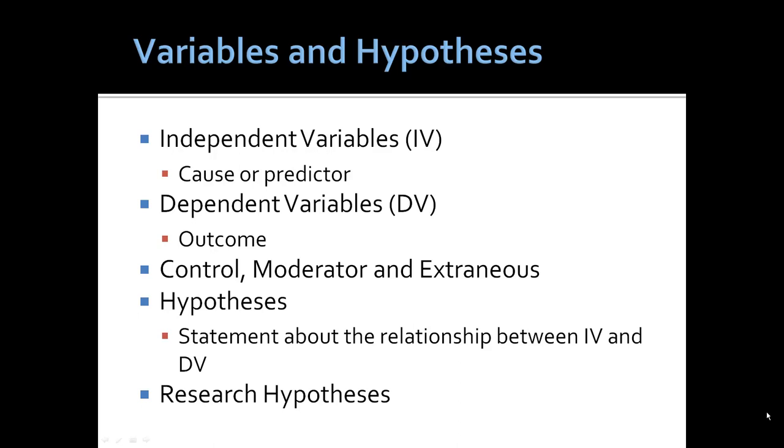The independent variable is the cause or predictor variable. The dependent variable is the outcome variable. There are other variables, such as control, moderator, or extraneous variables. The latter, the extraneous variable, will be connected to spurious relationships later in this lecture.